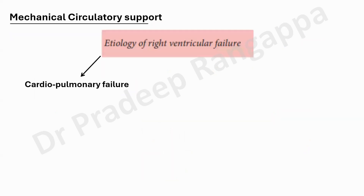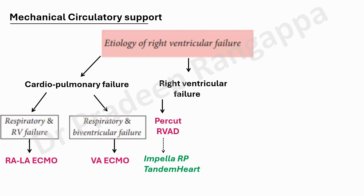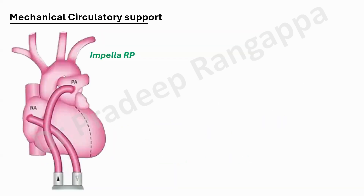If all this fails, move to mechanical support. For cardiopulmonary failure involving both lung and heart, consider RA-LA ECMO. For respiratory and biventricular failure, VA ECMO. For isolated right ventricular failure, consider percutaneous RV assist devices — Impella RP, TandemHeart, or surgical RVAD with CentriMag or Biomedicus. For isolated respiratory failure, VV ECMO. Even when patients are on VV ECMO, all measures to reduce pulmonary vascular resistance, reduce PA pressure, treat the underlying cause, and improve RV contractility must continue.